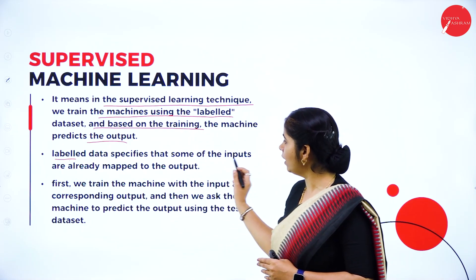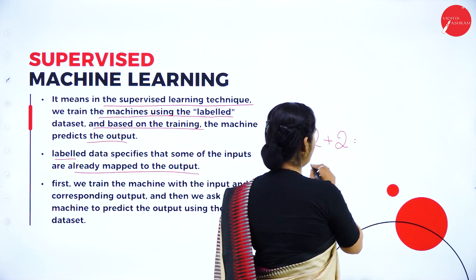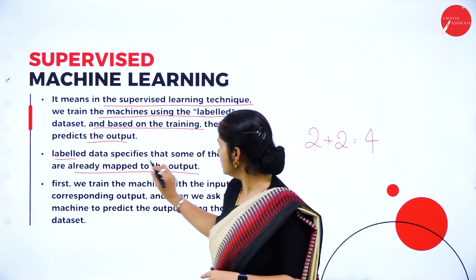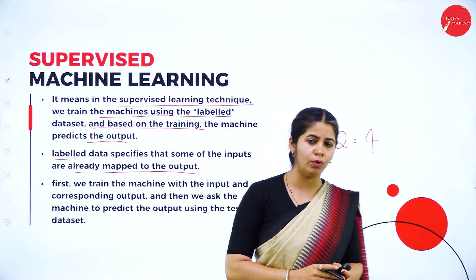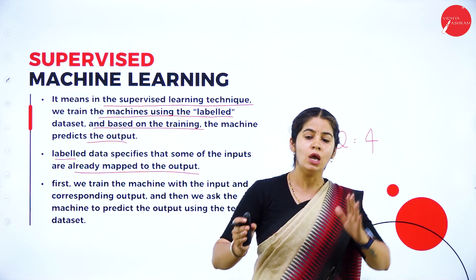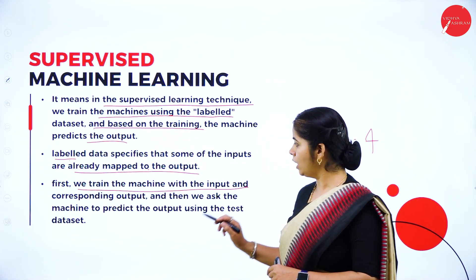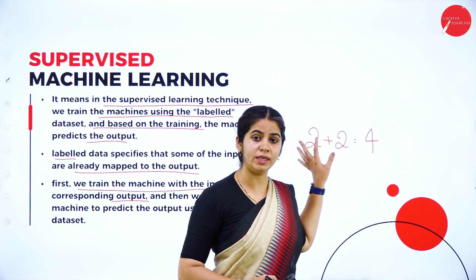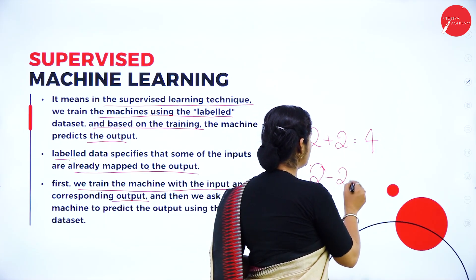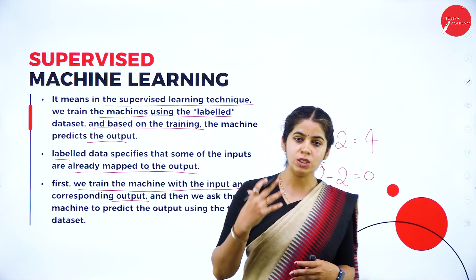Labeled data specifies that some inputs are already mapped to the output. For example, if I say 2 plus 2 as input, it should give 4 — this is already mapped, it is a labeled one. We are categorizing properly: for which input, what output should be there. First we train the machine with the input and the corresponding output. We have to tell the machine that for this input 2 minus 2, this should be the output — because the machine does not have its own intelligence.